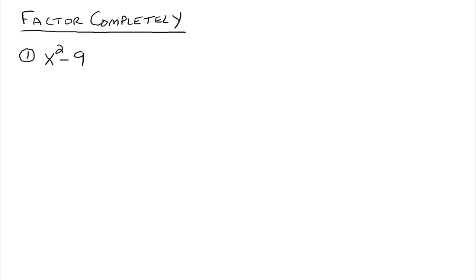Factor x squared minus 9. The first thing we always want to look for when factoring is the greatest common factor. Is there something common to all your terms in the polynomial? There's not here — just a 1 — so there is no greatest common factor. Next, we look for whether we have two terms. If we have two terms, then if it's going to factor, it needs to factor into the form of the difference of two squares — something squared minus something else squared. So the question is: is x squared minus 9 something squared minus something else squared? We've got the x squared, so there's something squared, minus 9.